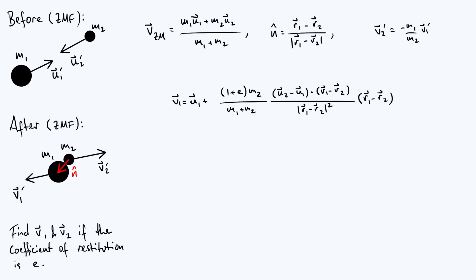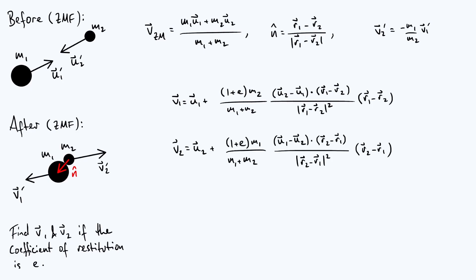After all that work, we have our expression for v1 in terms of all other parameters of the system. It's not the smallest expression, but it ends up looking quite clean. To find v2, we can use symmetry: since there's nothing special about which sphere was labeled one or two, swapping all ones and twos in the v1 equation gives v2 directly. We now have both final velocities in terms of all original parameters — the problem is solved.